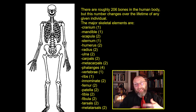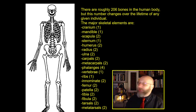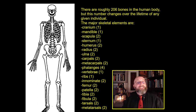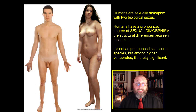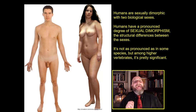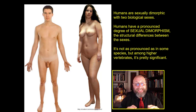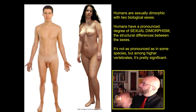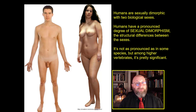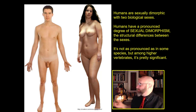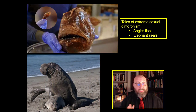Different bones can provide different information depending on what questions you're asking. But there is a stark difference between male and female skeletons - you have different skeletal architecture for each of the two biological sexes. Humans are sexually dimorphic with two biological sexes: biological males and biological females. Sexual dimorphism is the structural differences between the sexes, and humans have a fairly significant degree of sexual dimorphism.